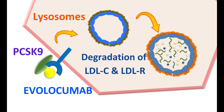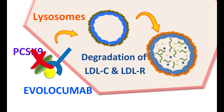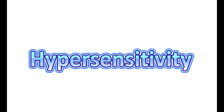Evolocumab is an immunoglobulin G2 analog which can block the enzyme PCSK9. By inhibiting this enzyme activity, it can reduce the degradation of LDL receptors, thereby increasing their recycling. As LDL receptors are more recycled, they are more expressed on the hepatocytes, which increases the uptake of LDL. In this way, in people with elevated LDL cholesterol levels, Evolocumab can reduce serum cholesterol levels by increasing their uptake into the liver.